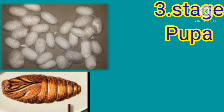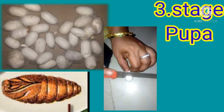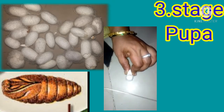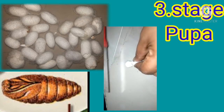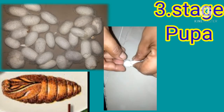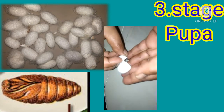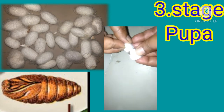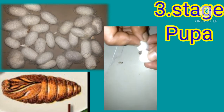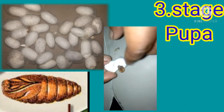Shall we check? Now I will cut the cocoon. Observe — this is the pupa stage. The caterpillar has already developed its organs.